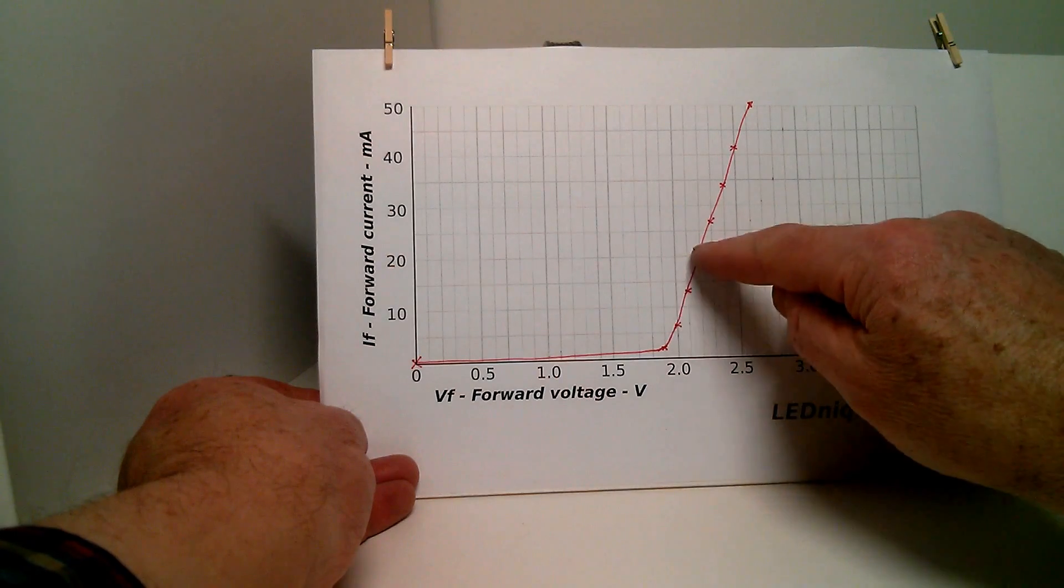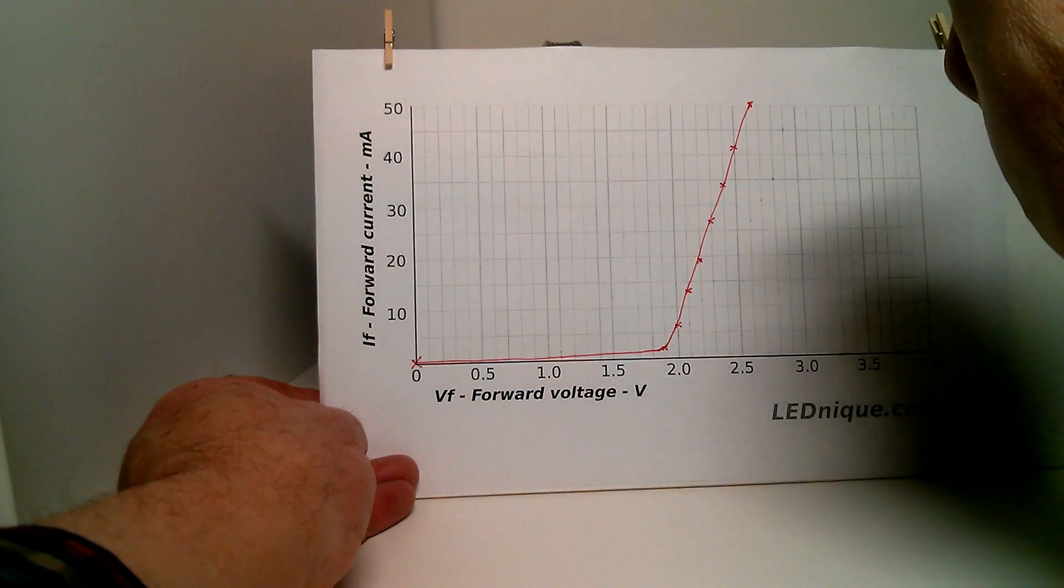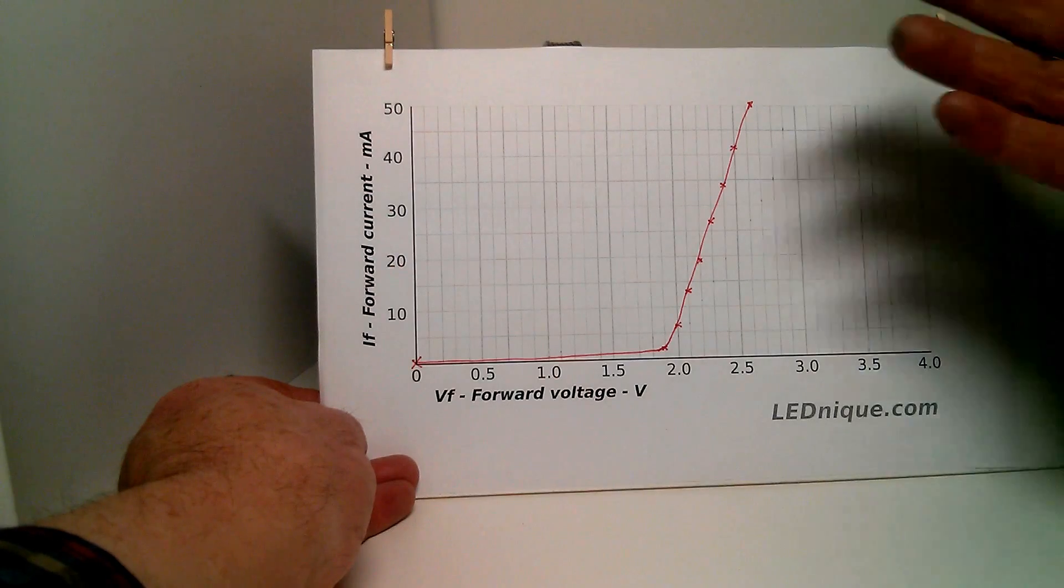And therefore, we need to current limit the LEDs. This is the IV curve for the green LED.